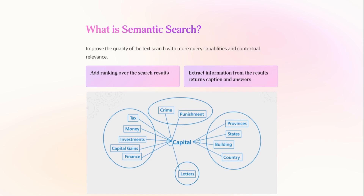That's where Semantic Search comes into play. When you search for something like 'what is the capital of Pennsylvania,' it's going to understand that you are asking for a specific capital — in this case, the state's capital — and return results relevant in that context, like Harrisburg.